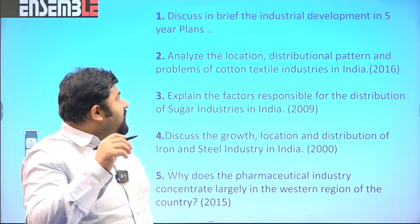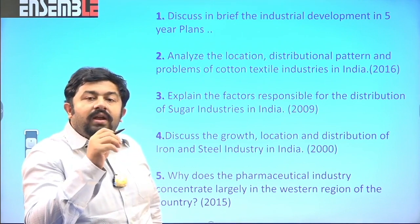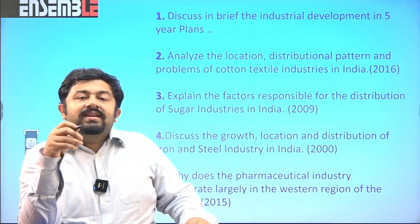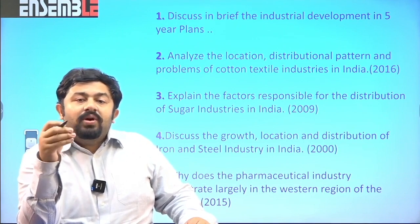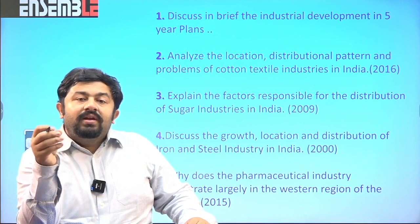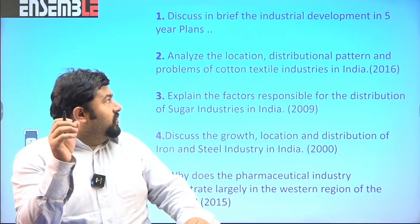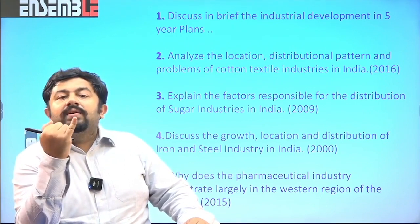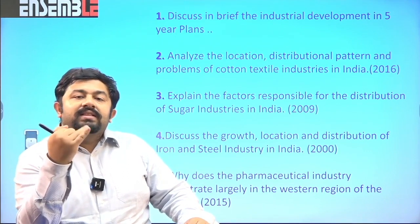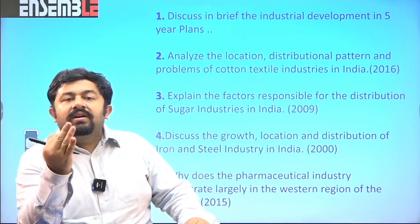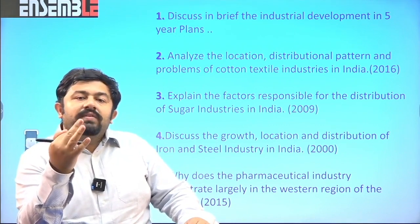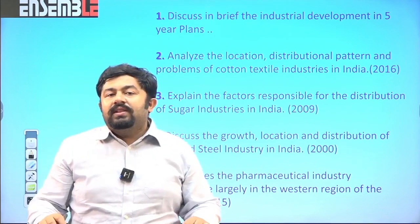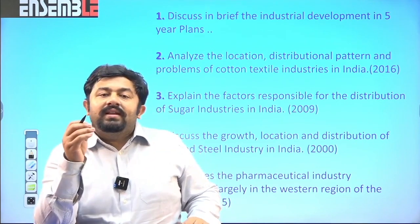Question number two: analyze the location, distribution pattern and problems of cotton textile industries in India. As we know, cotton textile is a major industry providing employment to lakhs of people — not only farmers but also workers. In questions like this, there are three components: first, the location factor — why is a certain industry located in certain regions; second, how is it distributed; and third, the problems and challenges. A fourth thing you need to add is what are the government's efforts, written in the form of schemes, which can also serve as a conclusion.